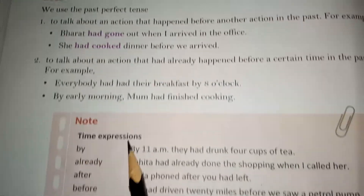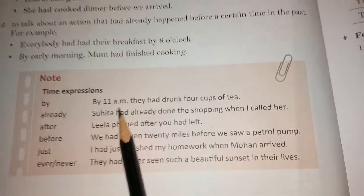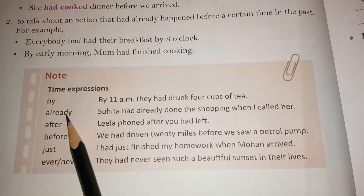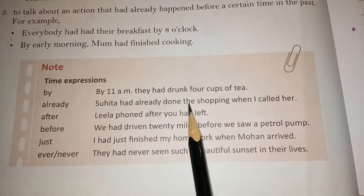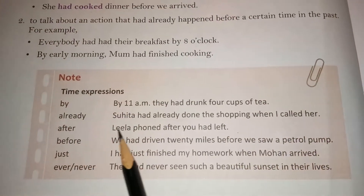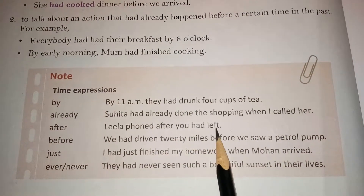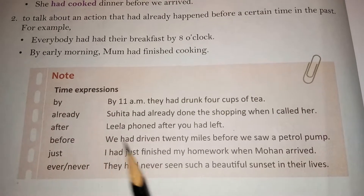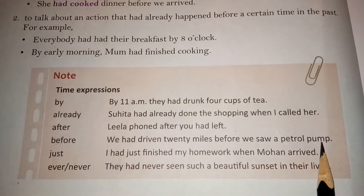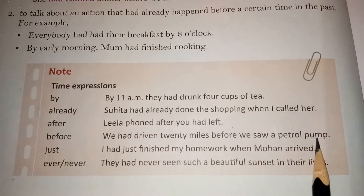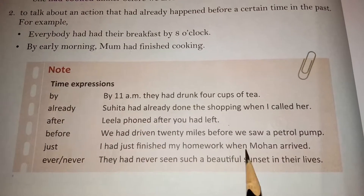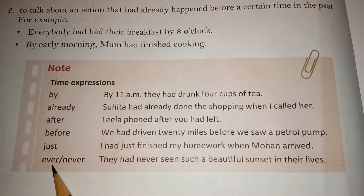Time expressions used with past perfect tense: By — By 11 a.m., they had drunk 4 cups of tea. Already — Suhita had already done the shopping when I called her. After — Leela phoned after you had left. Before — We had driven 20 miles before we saw a petrol pump. Just — I had just finished my homework when Mohan arrived. Ever, Never — They had never seen such a beautiful sunset in their lives.